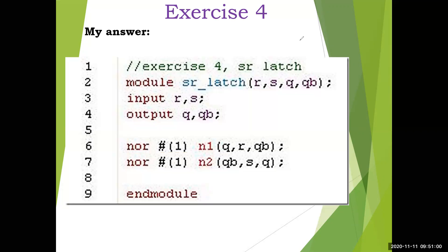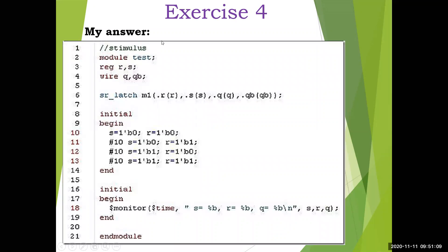Now we'll write the stimulus module. The delay is included in the design, and there is also a delay in the stimulus module. The stimulus module follows the same structure as before: module name, inputs declared as registers, output declared as wire. Then call the design — SR latch with instance name m1. Connecting ports by name format: R to R, S to S, Q to Q. We have passed the four inputs: 0 0, 0 1, 1 0, 1 1, with a delay of 10 time units.